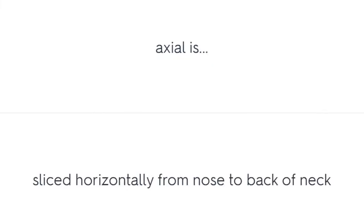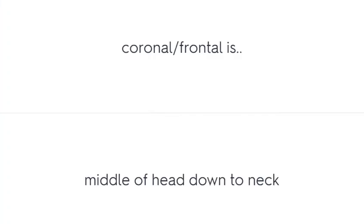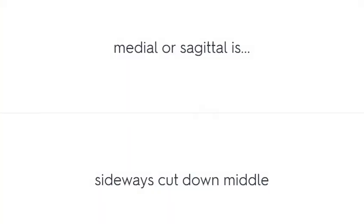Axial is sliced horizontally from nose to back of neck. Coronal or frontal is a cut from the middle of the head down to the neck. Medial or sagittal is a sideways cut down the middle.